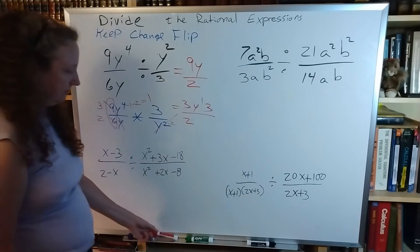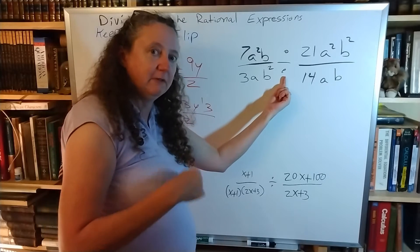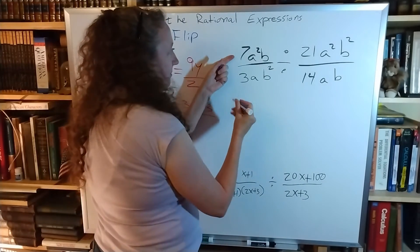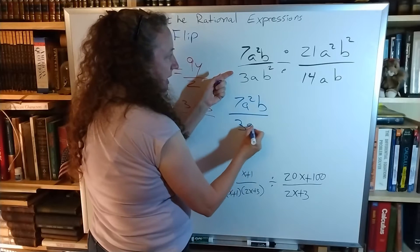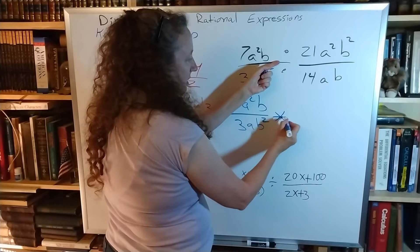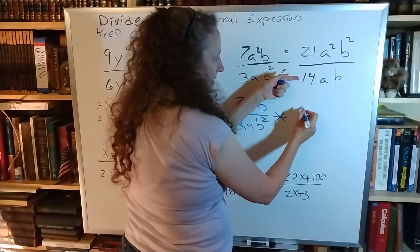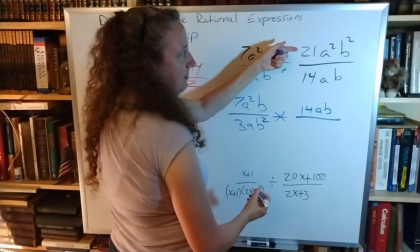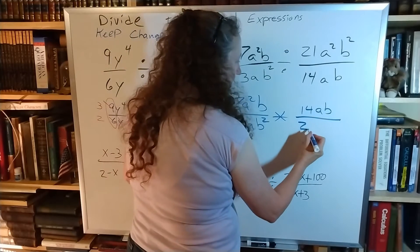Looking at the next problem. Again we have a division — no canceling yet. We have to flip and change first. So I'm going to keep this the same: 7a squared b over 3ab squared. Change that to times, and flip this — so the 14ab goes to the top and the 21a squared b squared goes to the bottom.